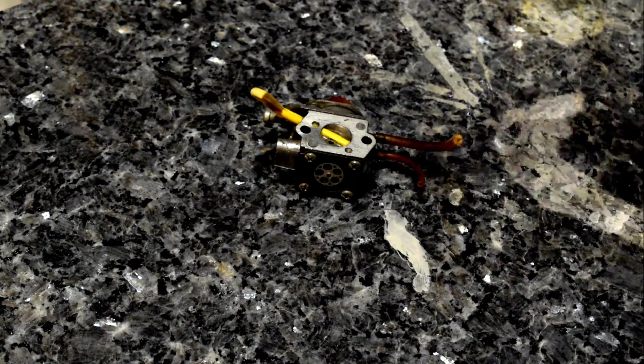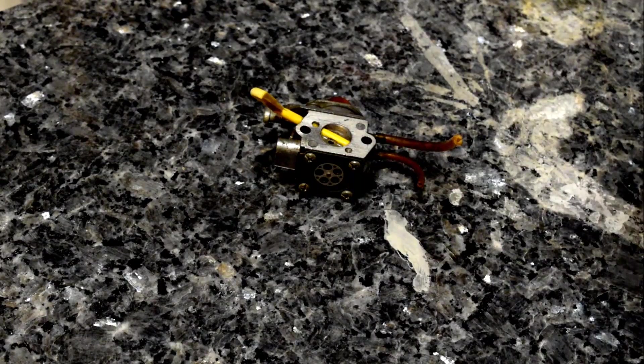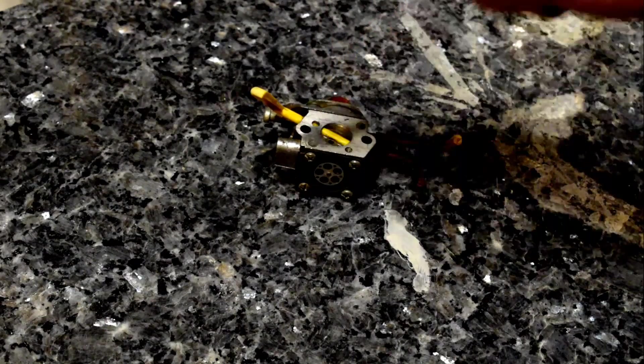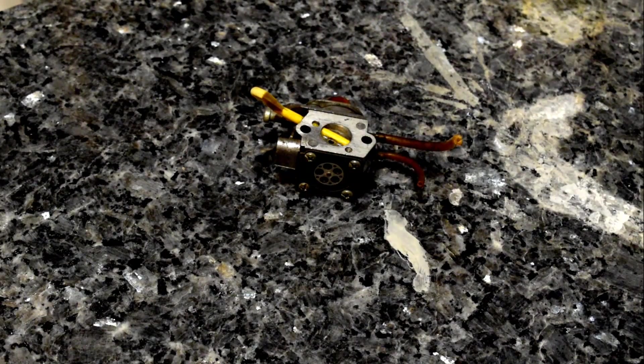So today what we're going to do is we're going to jump into Fusion 360, we're going to design this plate, we're going to print it out on the 3D printer, and we're going to cast it out of aluminum. Let's get started.